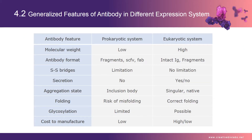Different antibody expression systems have different expression features, as listed in the table — including molecular weight, antibody format, secretion formats, folding formats, and so on. According to your antibody structure and character, choose a suitable expression system.